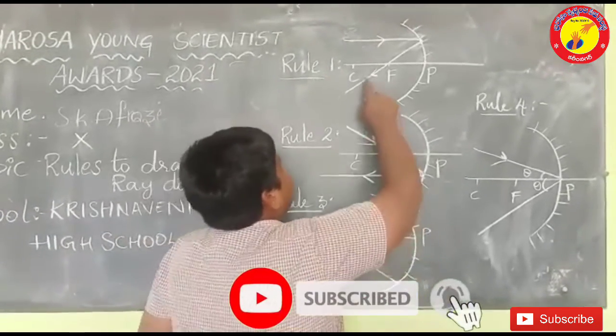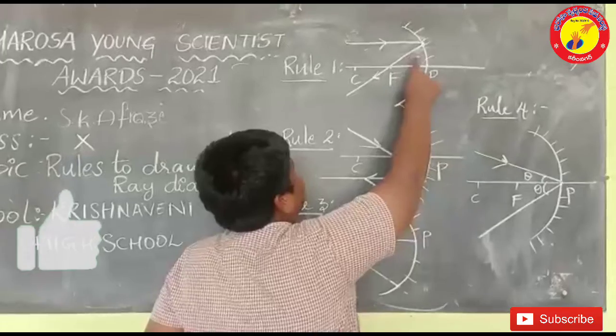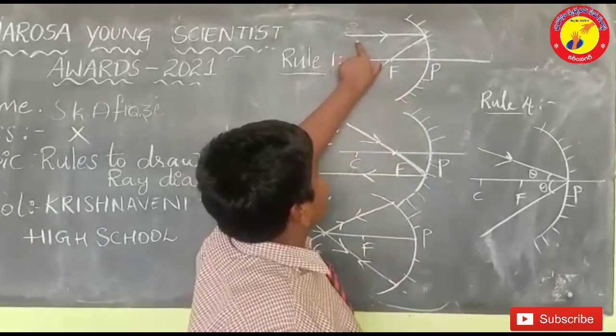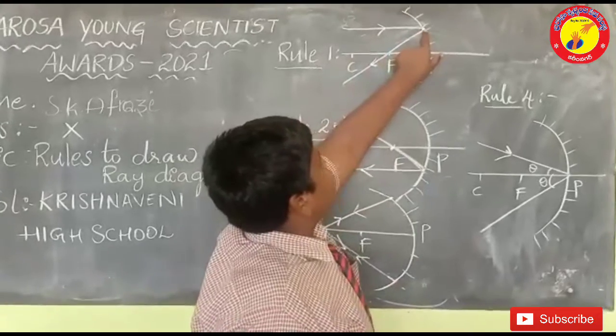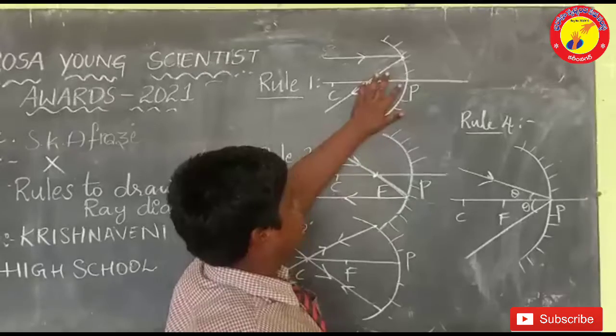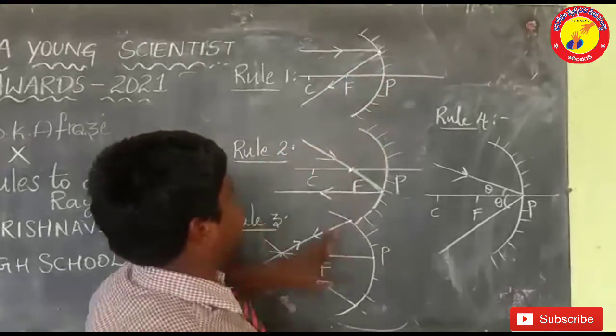Rule 1: The ray which is going parallel to principal axis reflects through focus. Here we can see an incident ray which is moving through principal axis will reflect through focus. This is used in both concave and convex mirrors.